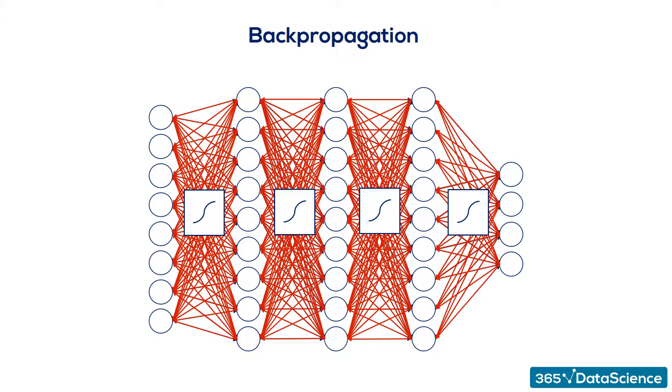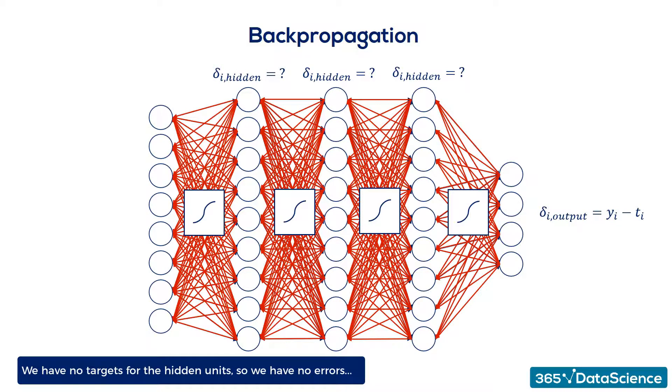Finally, to update the weights, we must compare the outputs to the targets. This is done for each layer. But, we have no targets for the hidden units. We don't know the errors. So, how do we update the weights? That's what backpropagation is all about. We must derive the appropriate updates as if we had targets.